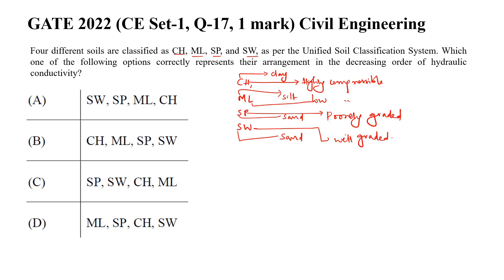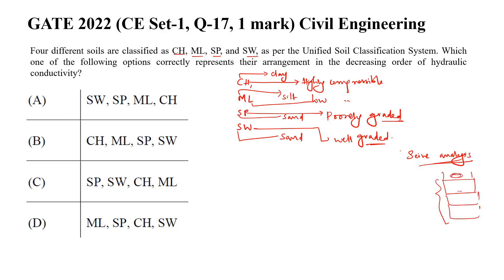To understand well graded and poorly graded sand, let us look at sieve analysis. Sieve analysis is done by taking different size sieves, placing the sample in the top sieve, then shaking. The soil is retained in different sieves, and from that we plot a graph of percentage of fines versus sieve size.